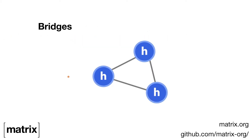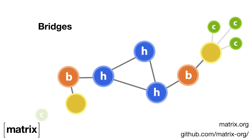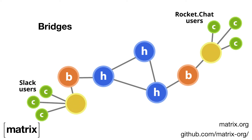We also extend the network into existing services via bridges, which means, for example, that a user on Slack can talk to a user on RocketChat via Matrix without realizing or needing to realize it.